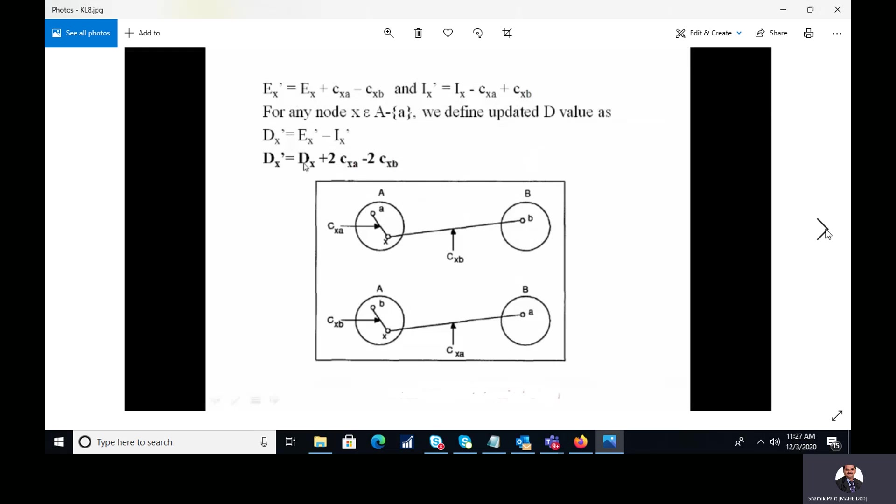Similarly, while you start calculating the final value of Dx, which is nothing but D'x over here, it is the difference between the updated external cost minus updated internal cost. And we have already calculated the value of Ex' and Ix'. So ultimately, this is the final expression.